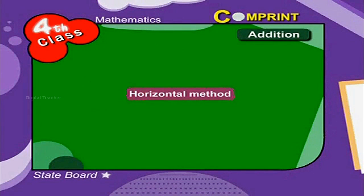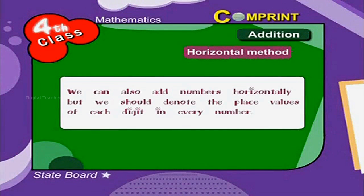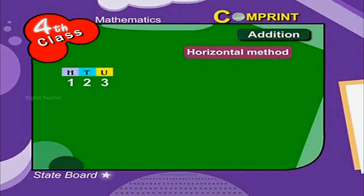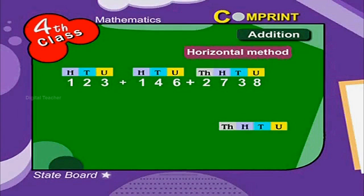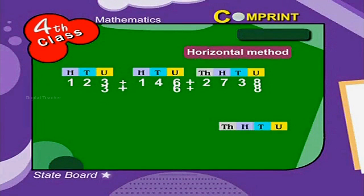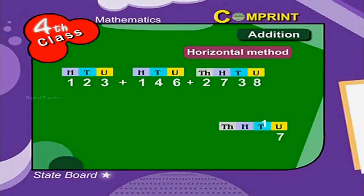Horizontal method of addition. We can also add numbers horizontally, but we should denote the place values of each digit in every number. Look at the example: 123 plus 146 plus 2738. Add all the digits of the units place first. That is 3 plus 6 plus 8 is equal to 17 — that is 1 ten and 7 ones. We carry 1 to the tens place.